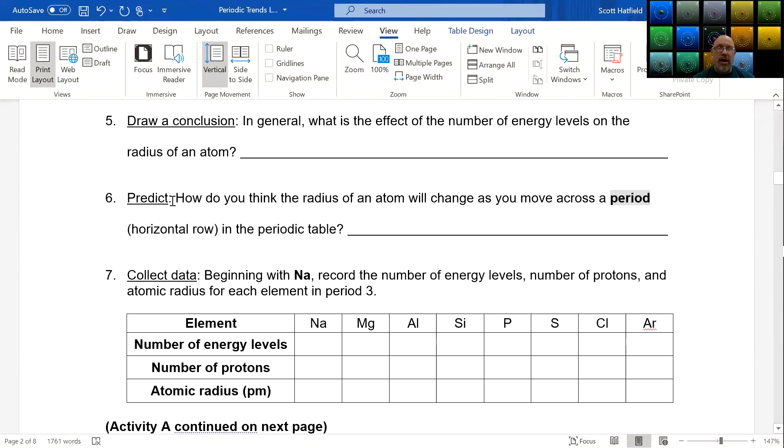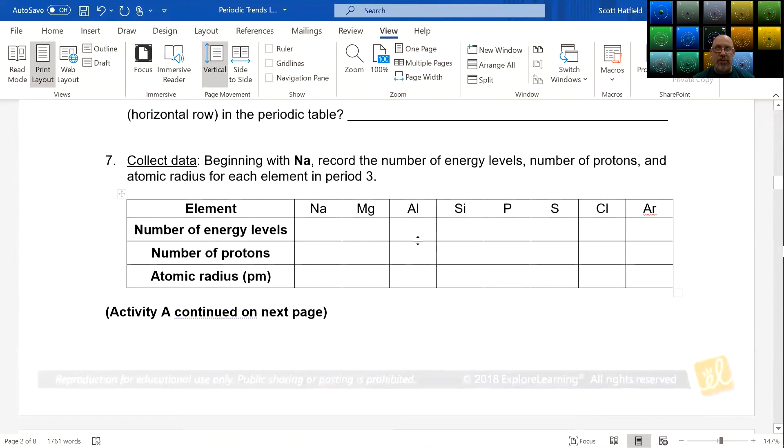So whenever you're asked to make a prediction, don't worry about whether your prediction is true or false. That's not going to affect your grade. Here's another one. How do you think the radius of an atom changes as you move across a period, you know, going left to right in a horizontal row? Again, that's, you shouldn't worry about being right or wrong. You should worry about, is it falsifiable? Of course it will be, because you'll be collecting data. And from the data, you'll be able to tell what's going on.